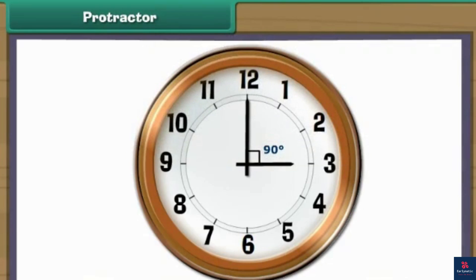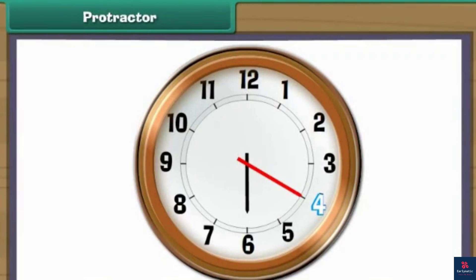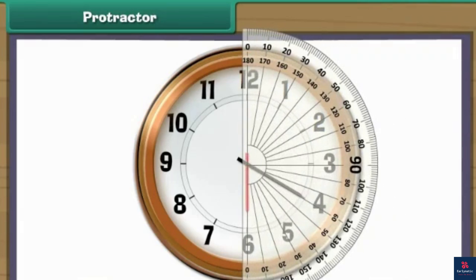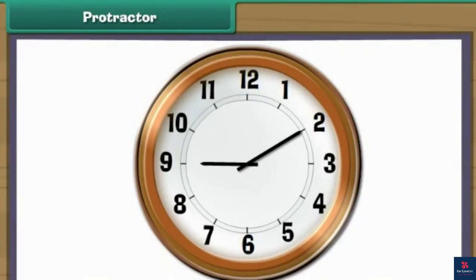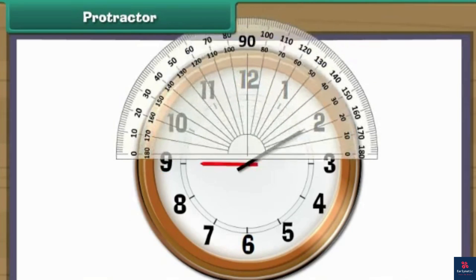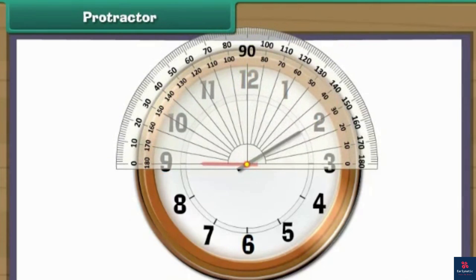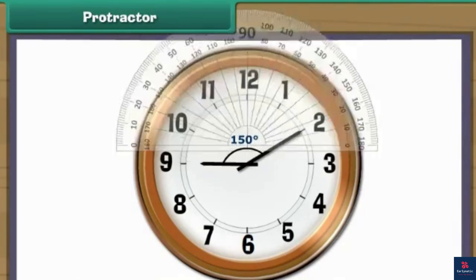Therefore, 3 o'clock makes a right angle. This clock shows 20 past 6 — the long hand is on 4 and the short hand is on 6. Place the protractor on the short hand of the clock. Read the inner marking of the protractor on which the long hand rests — it is 60 degrees. Therefore, the time 20 past 6 makes an acute angle. The time is 10 past 9 — the long hand is on 2 and the short hand is on 9. Place the protractor on the short hand. Read the outer marking — it is 150 degrees.